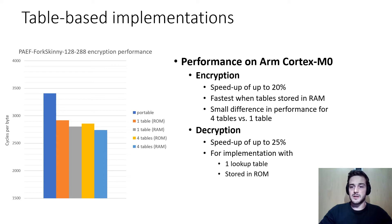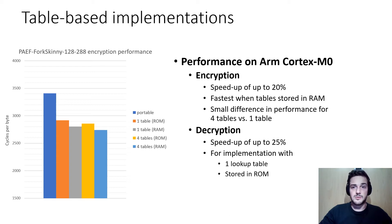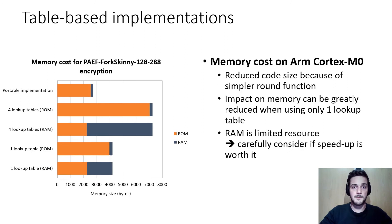An important note: a lookup table implementation is only suited for platforms where cache timing attacks are not possible. That is why we only tested it on the ARM Cortex-M0, which has no cache at all. For encryption, a speedup of 20% was achieved compared to the portable implementations, with best results when tables are stored in RAM. The difference in performance between using 4 tables or only 1 table is very small. For decryption the speedup is even higher due to the more efficient new inverse round.